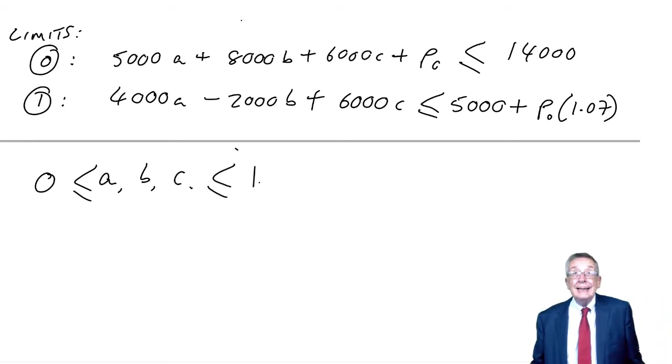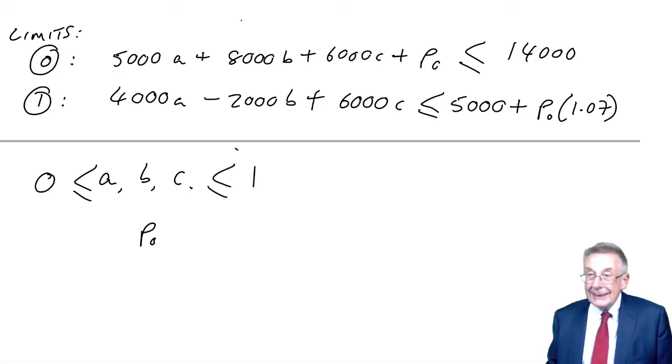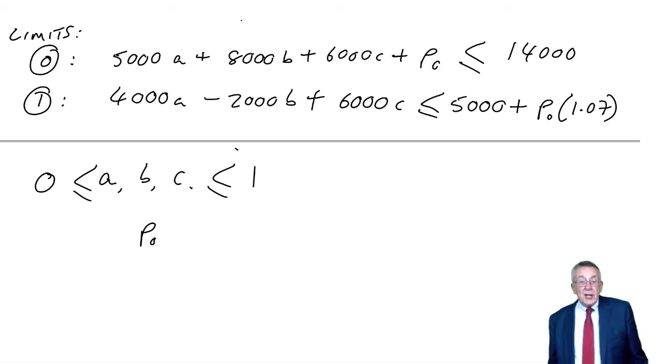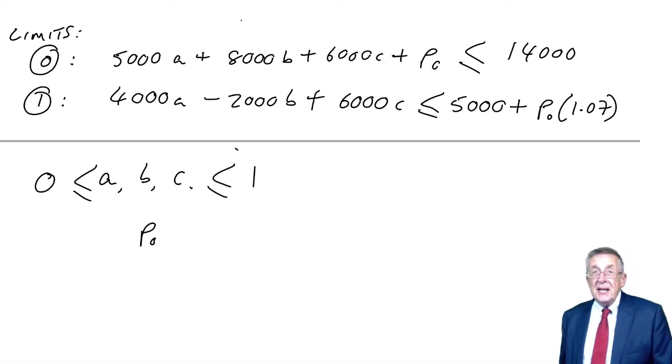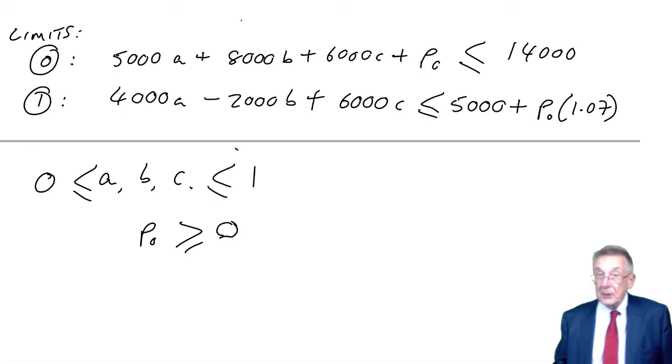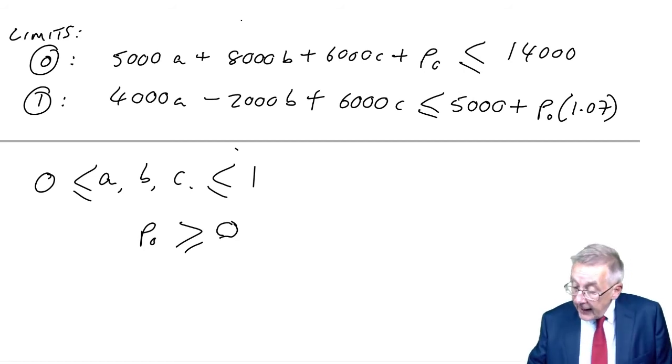In addition, for completeness, A, B and C, they must be greater than or equal to zero. You might decide to invest in zero of A, fine. You can't invest in a negative amount. And they must be less than or equal to one. We can do any fraction of A, B and C, but we can't do more than one of A, more than one of B. And finally, P0, although we don't have to put anything on deposit at time zero, so the answer might be zero, it can't be negative. P0 must be greater than or equal to zero.